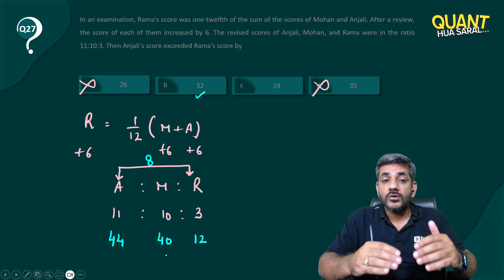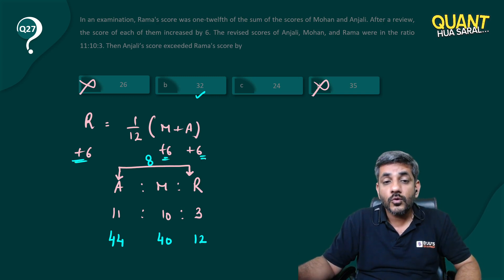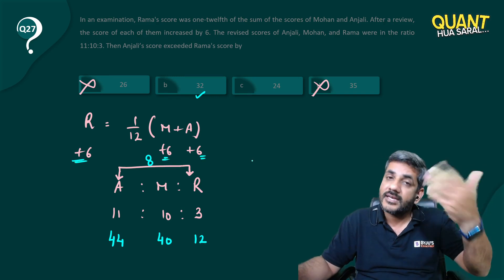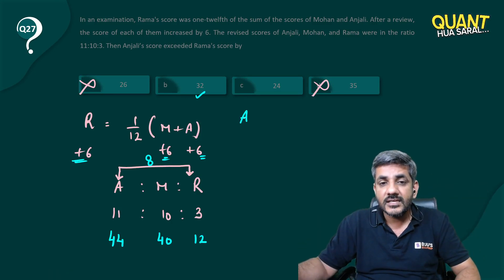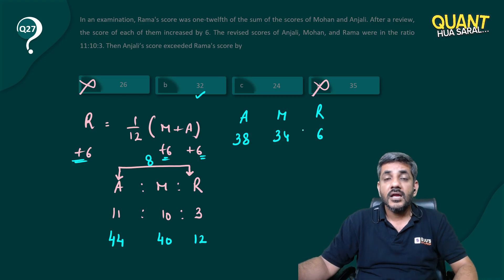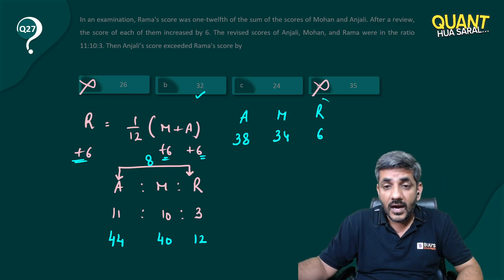Now these are the scores when they are increased by 6. So what were these scores when they were decreased by 6? I mean, what were the initial scores? Can I say Anjali's initial score must have been 38, Mohan's initial score must have been 34, and Rama's initial score must have been 6?